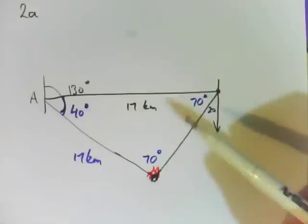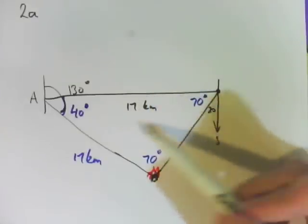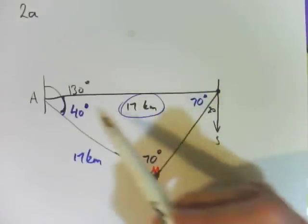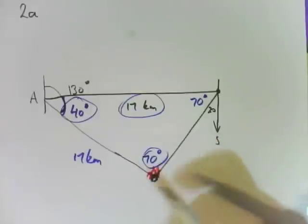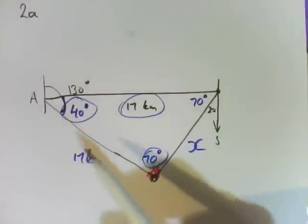And then I can use the sine rule. Given I know this side length, and this angle and this angle, I can use the sine rule to calculate this missing length here and we can work out which one is closer.